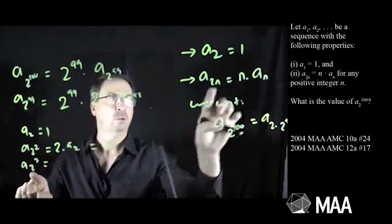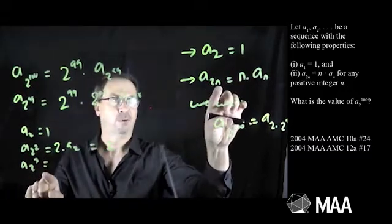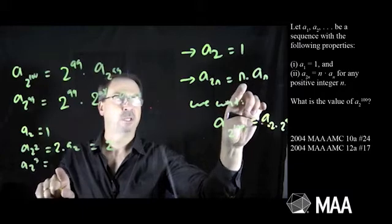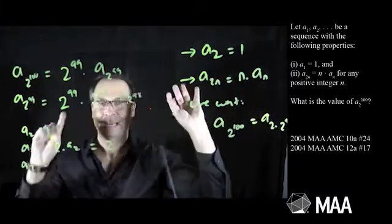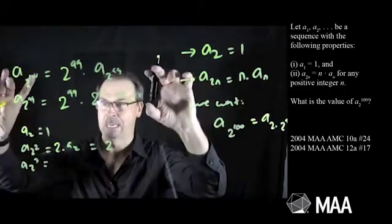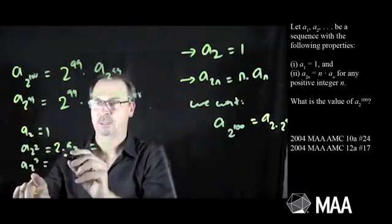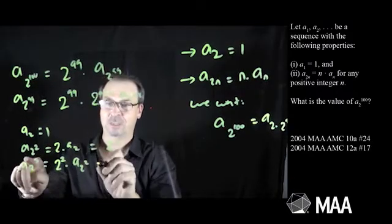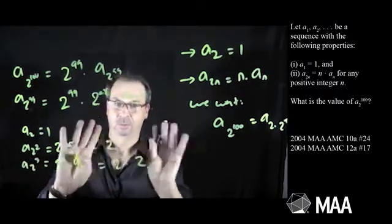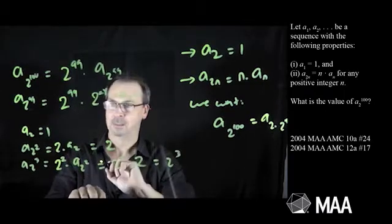a₂ cubed would be a₈, so it's 2 times 4, so it would be 4 times a₄. Let me keep it in terms of powers of 2, that seems to be key here. It's 2 times 2 squared, so it would be 2 squared times a₂ squared, which we just worked out as 2 squared times 2, which is 2 cubed.